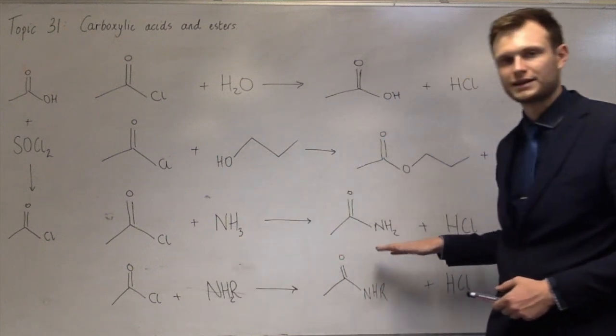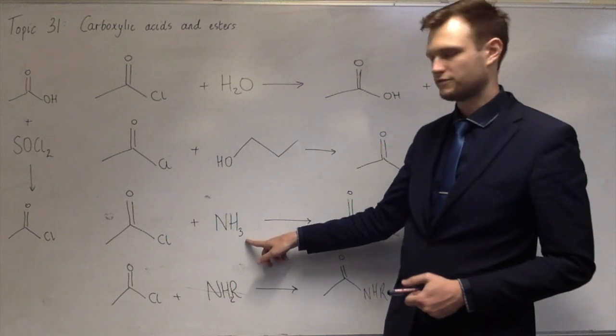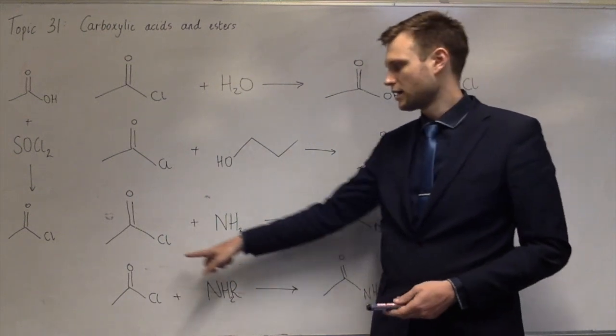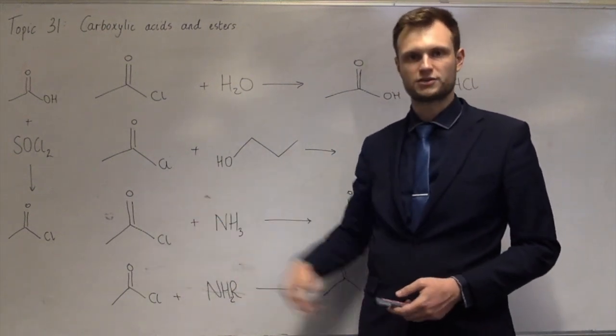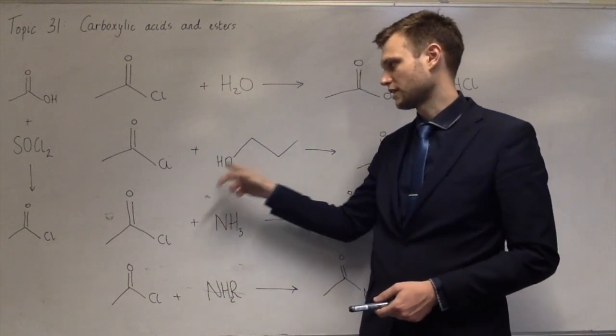So it would do the same kind of esterification as ethanoic acid. And these, like making an amide, is very similar to esterification, in that it loses an H from the ammonia, in this case, and the Cl from next to the carbonyl group, which is very similar to what happens in the esterification of the H and the Cl there.